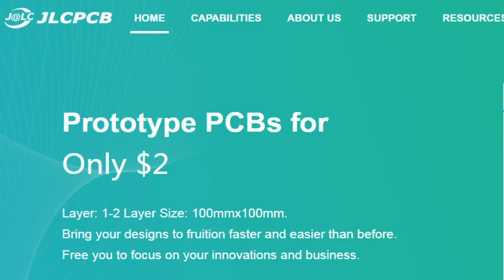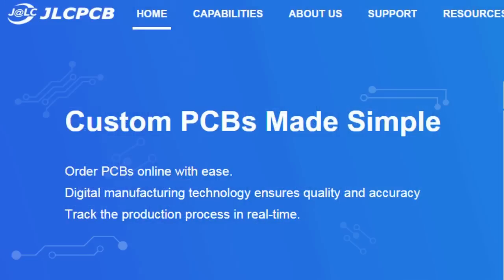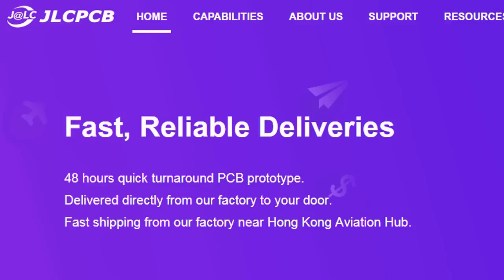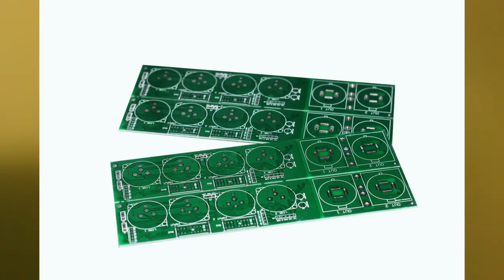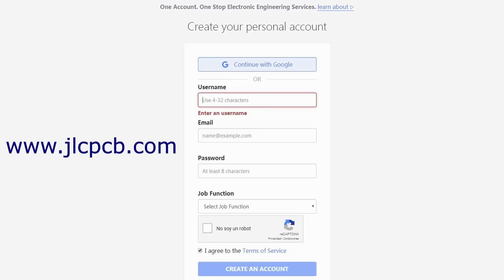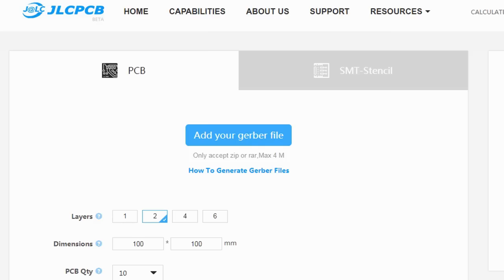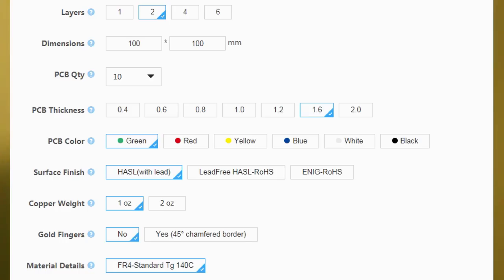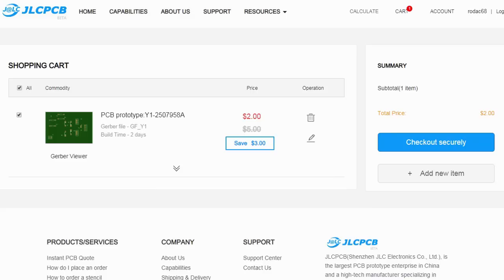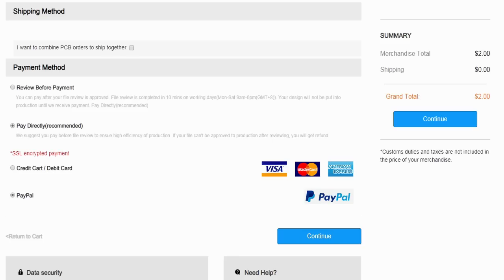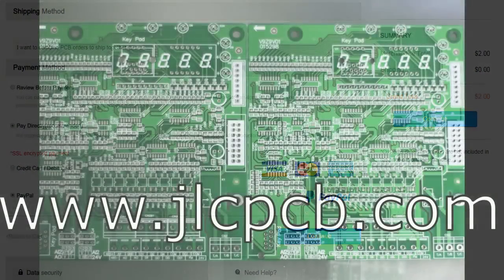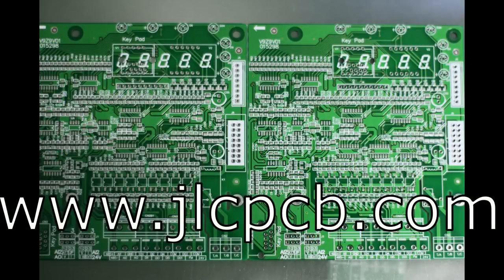This video is sponsored by JLCPCB. JLCPCB is a company that makes excellent quality PCBs at an unbeatable price. You can order boards online in minutes. After registration, upload your gerber files, select the PCB properties, select the payment method and place your order. Best price and quality for all your PCB needs.